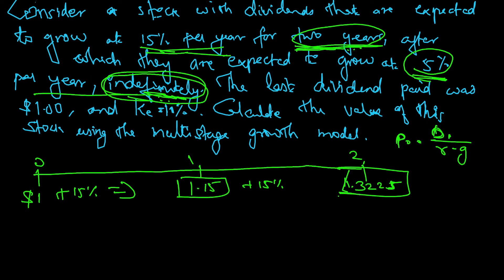So if this is dividend, next year's dividend divided by r is 11% required rate, cost of equity, minus growth rate is 5%. So it is 1.3225 divided by 6%.